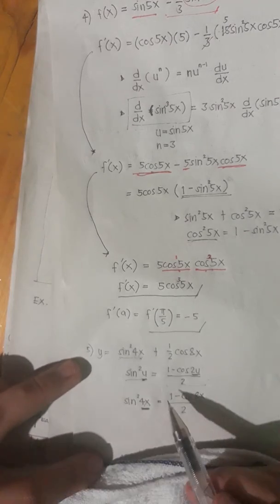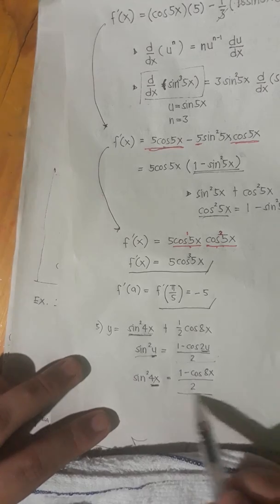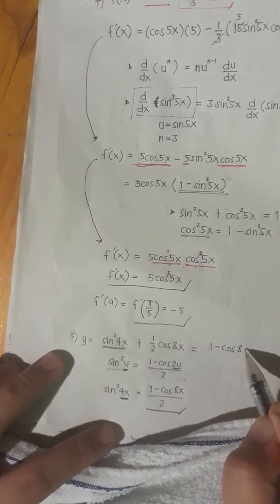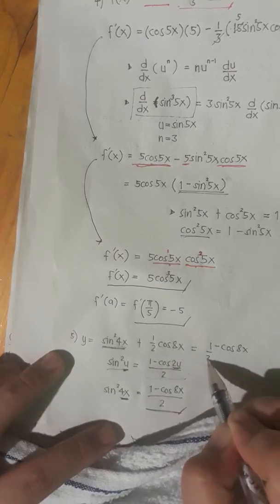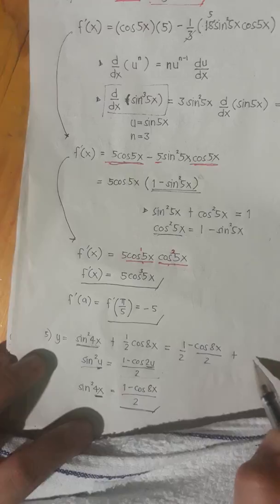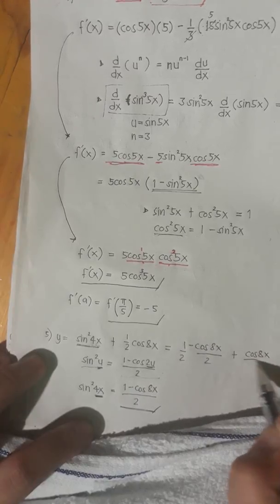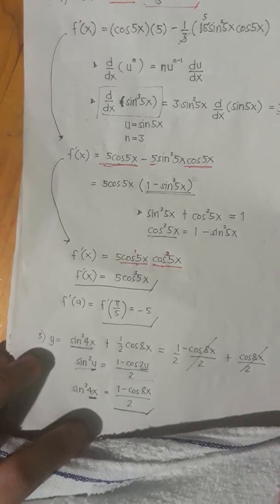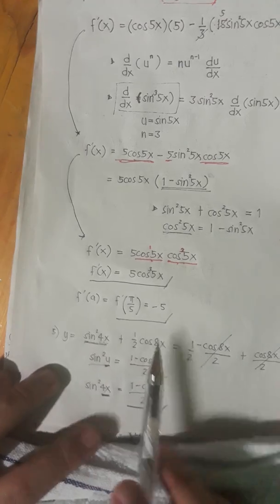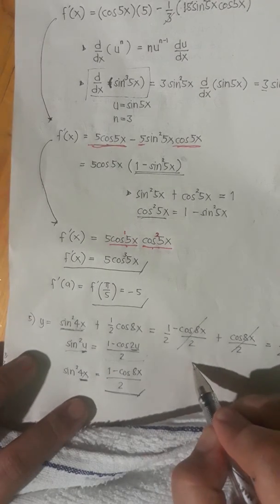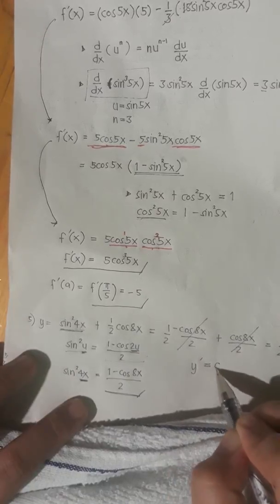We replace sine squared of 4x with 1 minus cosine 8x over 2. Distributing the denominator 2, we get 1 half minus cosine of 8x over 2. Then we have plus 1 half of cosine 8x. So the negative cosine 8x over 2 and positive cosine 8x over 2 cancel — this function is simply equal to a constant value of 1 half. The derivative of a constant value will always be equal to 0.